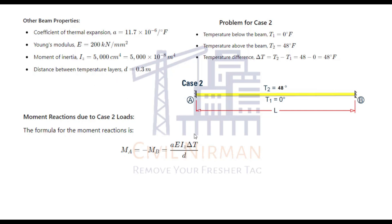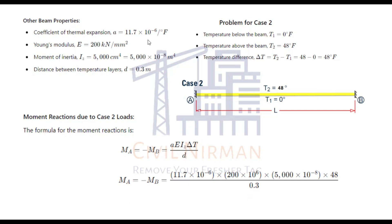All equation values are substituted: alpha is 11.7 × 10⁻⁶, E and Iz values are specified with appropriate unit conversion, and the temperature difference is 48 degrees. Working through the calculation gives a moment value of 18.72 kN·m. These are the two sample problems whose manual values we've now calculated. Next, let's switch to STAAD to verify.